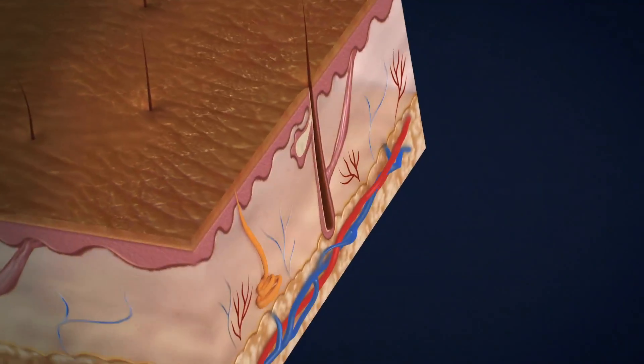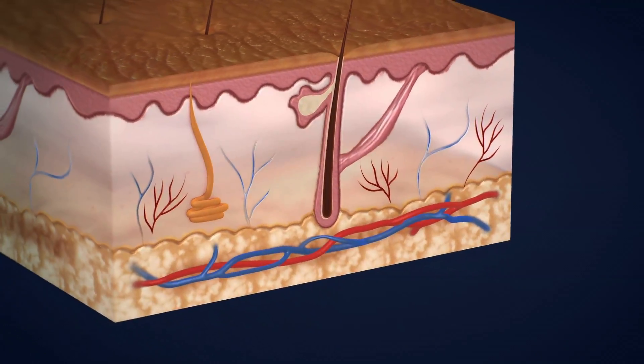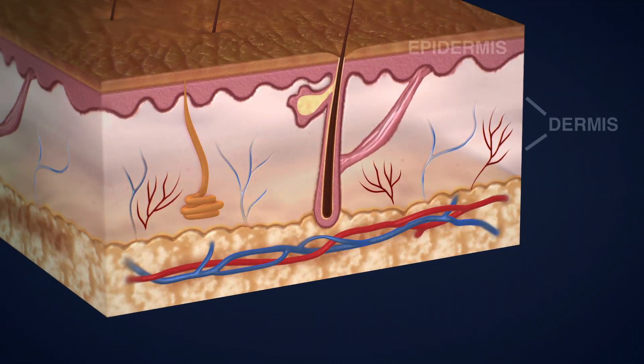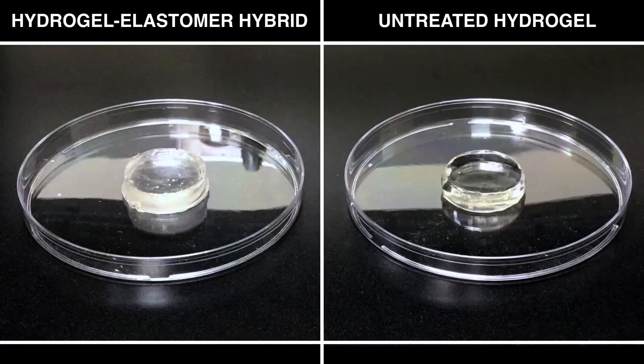The researchers pulled inspiration from skin, more specifically the bond between the epidermis and the dermis, where the epidermis acts as a shield protecting the dermis and its network of nerves and capillaries as well as the rest of the body's internal muscles and organs from drying out.